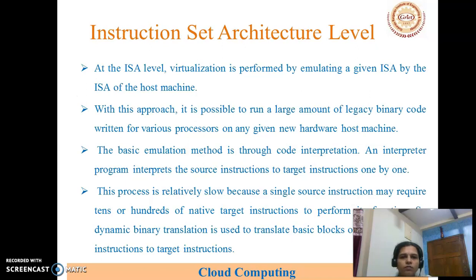At the instruction set architecture level, virtualization is performed by emulating a given ISA by the host machine. With this approach it is possible to run large amounts of legacy binary code written for various processors on any new hardware host machine. The basic emulation method is through code interpretation, where an interpreter program interprets source instructions to target instructions one by one. This process is relatively slow because a single source instruction may require tens or hundreds of native target instructions. Dynamic binary translation is used to translate basic blocks of dynamic source instructions to target instructions.